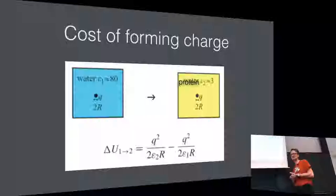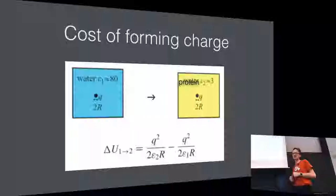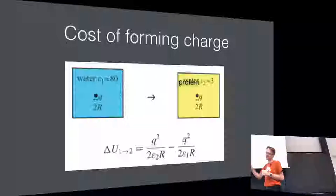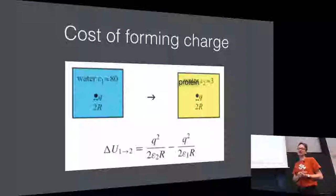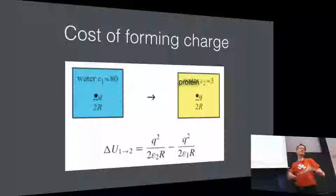Inside a protein, epsilon might be in the ballpark of 3 or 4 — much more like a pure hydrocarbon. That means screening is roughly a factor of 20 to 40 lower, so charges see each other at much longer distances inside proteins. For example, an electrostatic interaction that would be on the order of one or two kilocalories in water might be around 40 kilocalories inside a protein.